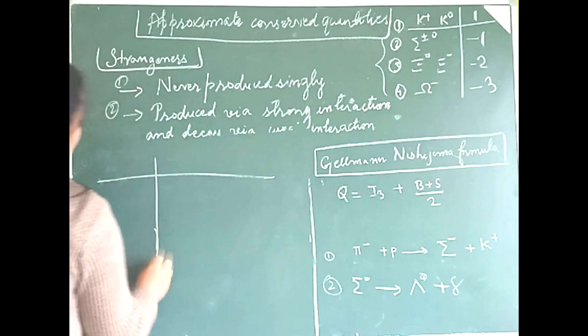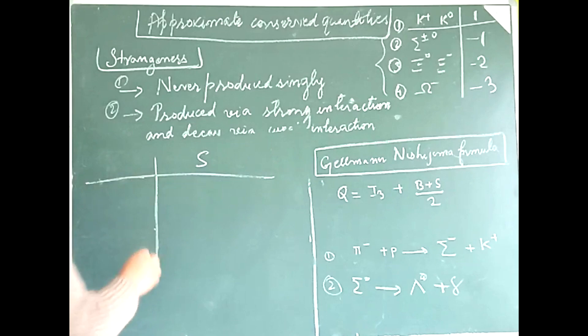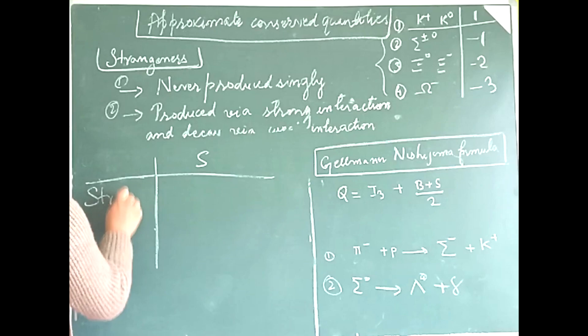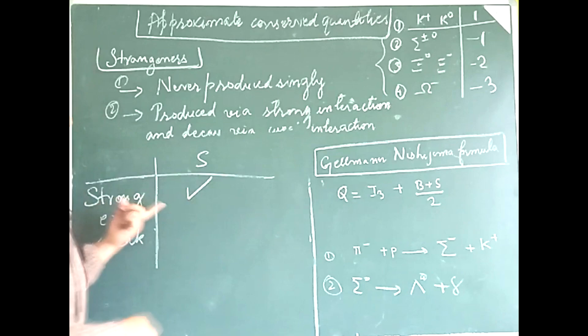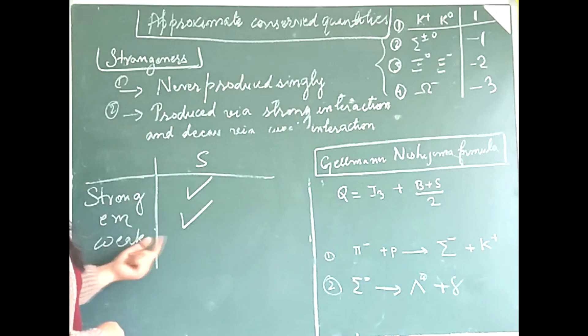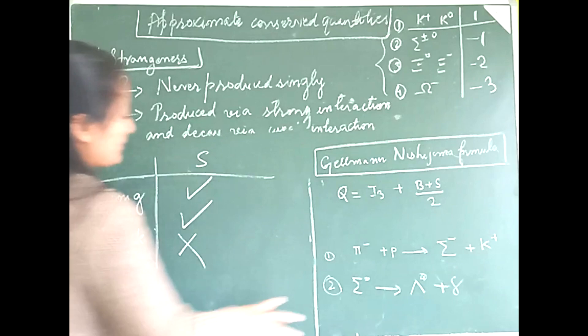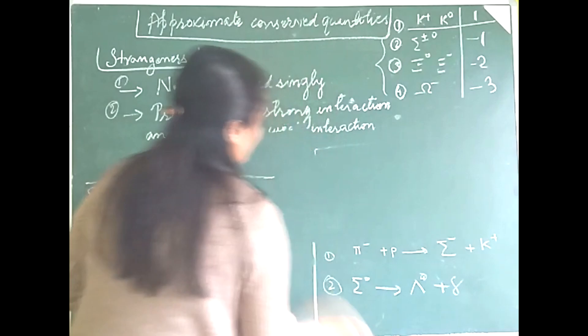Let us check in which interactions strangeness S is conserved. Strangeness is conserved in strong interactions and electromagnetic interactions, but it is not conserved in weak interactions. This is something we must keep in mind.